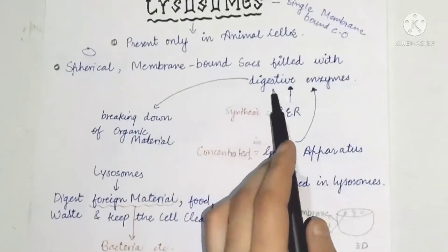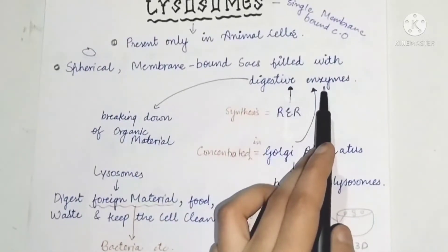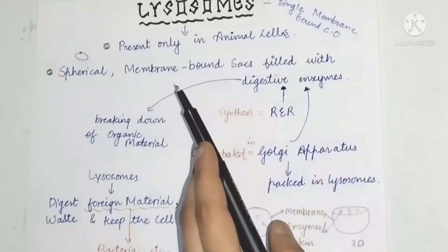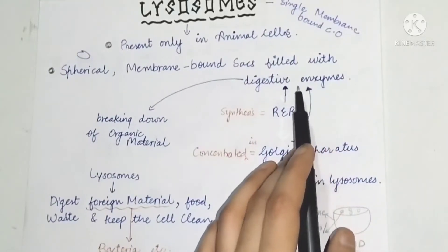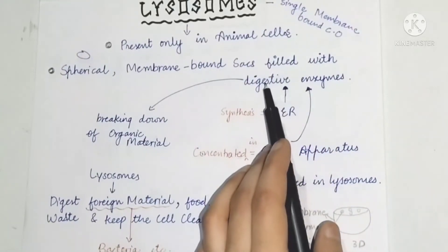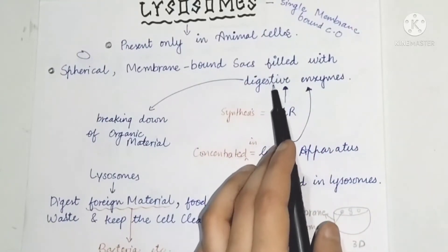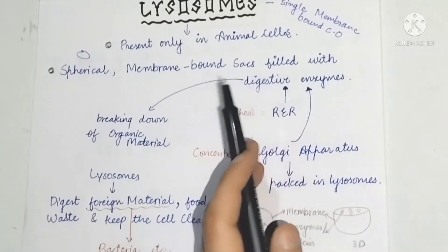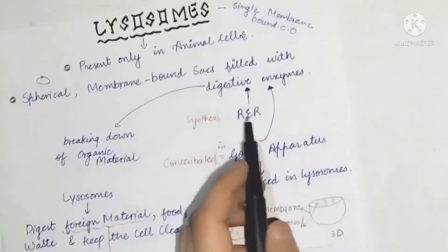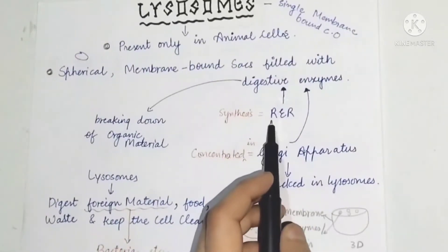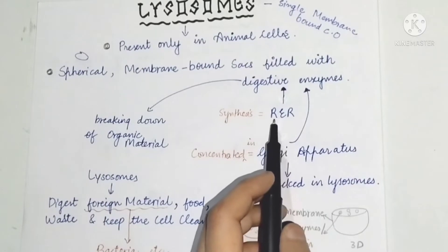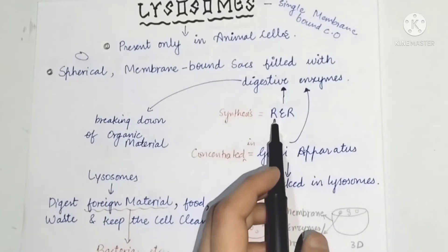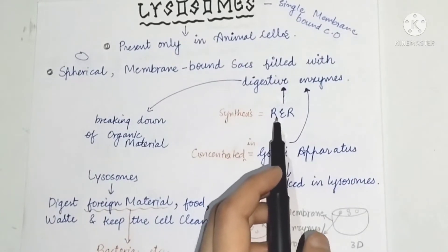These are called lysosomes. They contain digestive enzymes. These digestive enzymes are made in the rough endoplasmic reticulum, where ribosomes are present, and those ribosomes help make these enzymes.